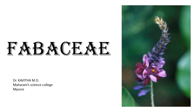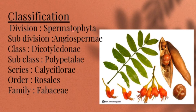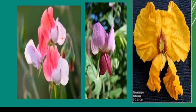Today I'm going to explain about family Fabaceae. Coming to the classification, it belongs to the division Spermatophyta, subdivision Angiospermae, class Dicotyledonae, subclass Polypetalae, series Calyciflorae, order Rosales, family Fabaceae. This family is also known as Papilionaceae or Fabaceae, commonly known as the P family.